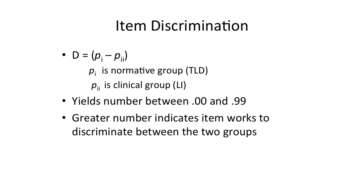The next thing you do is you look at item discrimination. Item discrimination is the comparison of the percentage of typical kids who got the item right and the percentage of children with impairments who got that item right. And we subtract and look at the differences between those two.